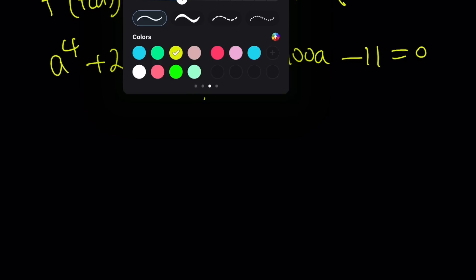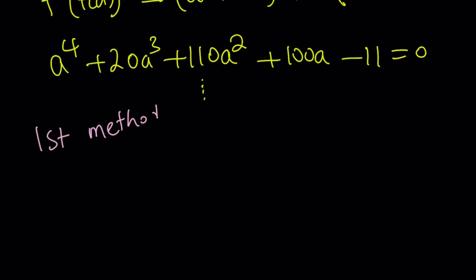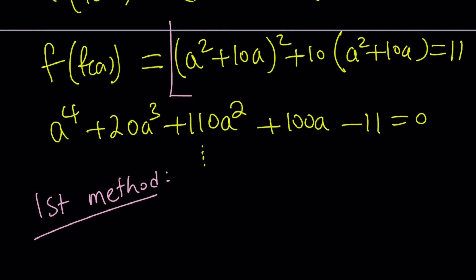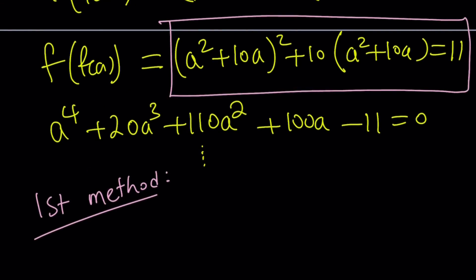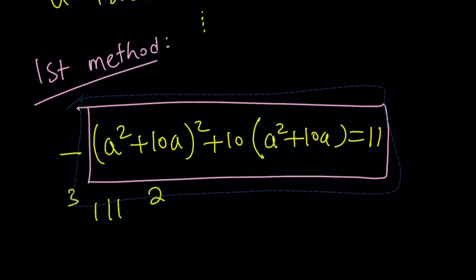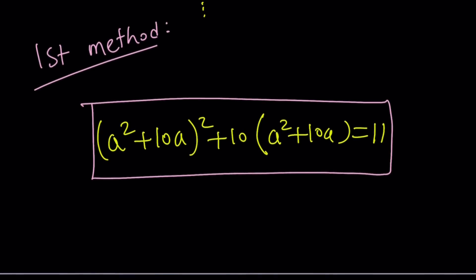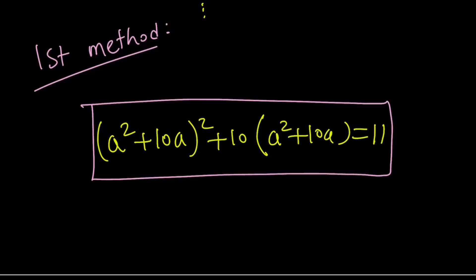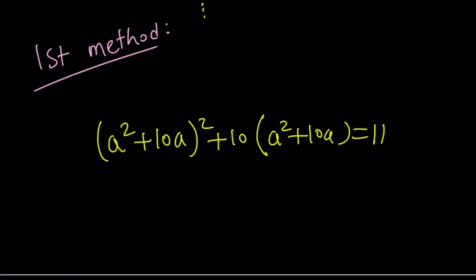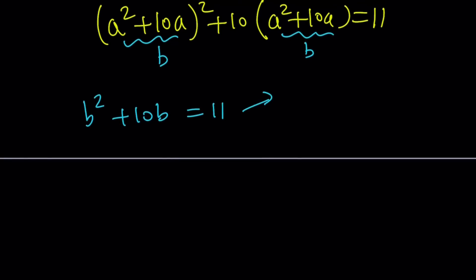Let's take a look at the first method. This equation is actually easy to solve because we can use the power of substitution. Let's call f of a as B — so a squared plus 10a becomes B. This gives us a very simple equation: B squared plus 10B equals 11. If you know a little bit of algebra, you'll hopefully realize B is either 1 or negative 11. You can also complete the square or add 25 to both sides to get the same answer.